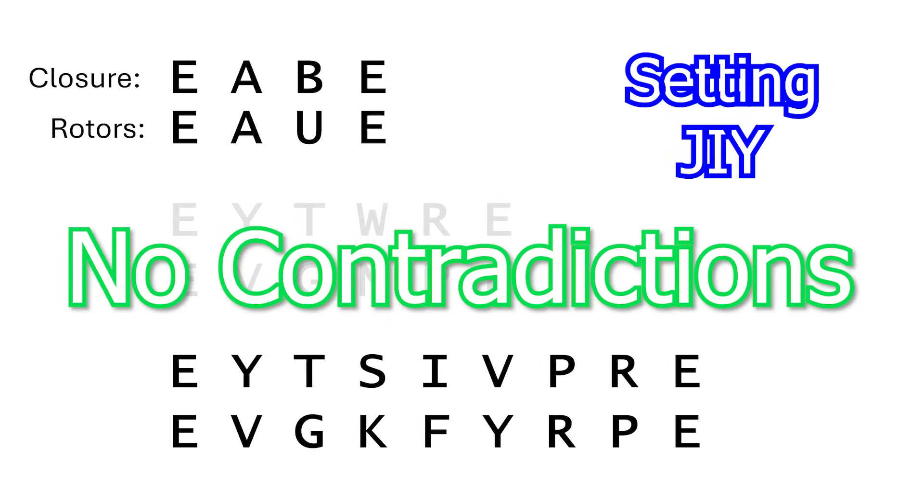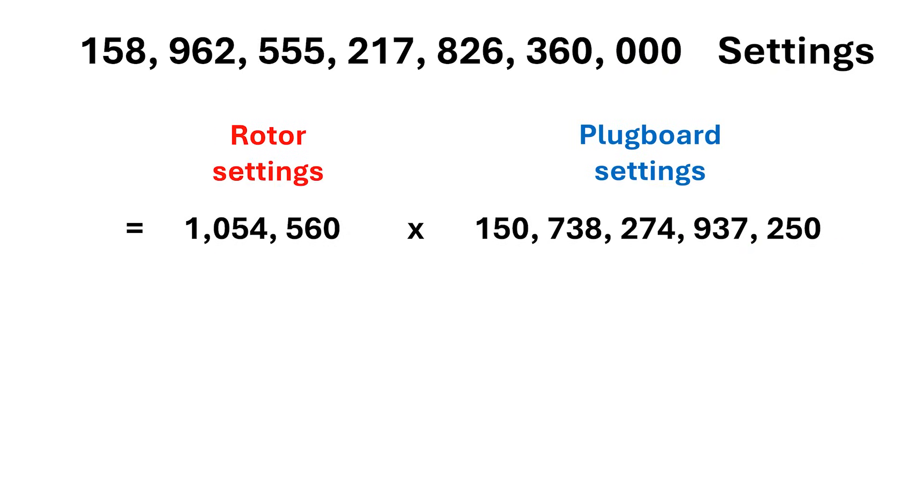So this gives us another rule we might be able to exploit without knowing all the plugboard settings before we start. Remember that it's the plugboard mappings that really blow out the number of possible settings for the Enigma.